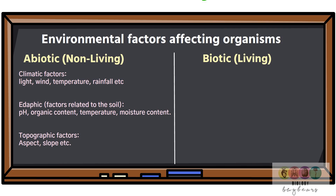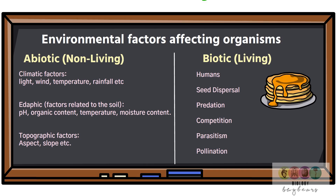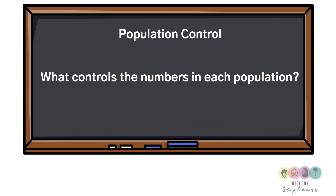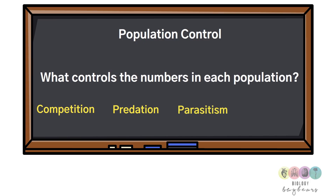Biotic factors include everything involving living things: the presence of humans, seed dispersal, predation, competition, parasitism, and pollination. Remember the pancake rhyme: 'How should people cook perfect pancakes?' To remember what controls populations, use CPPS: Competition, Predation, Parasitism, and Symbiosis — think of the wolves and elk at Yellowstone Park.